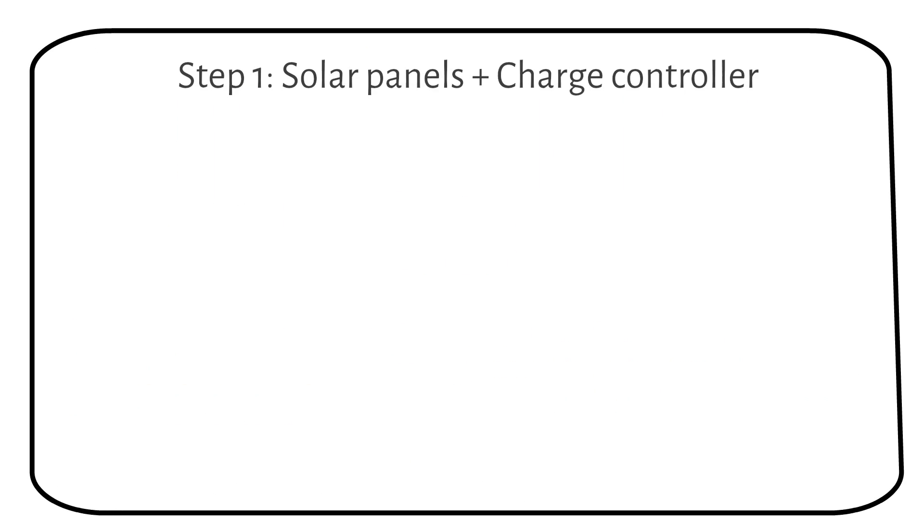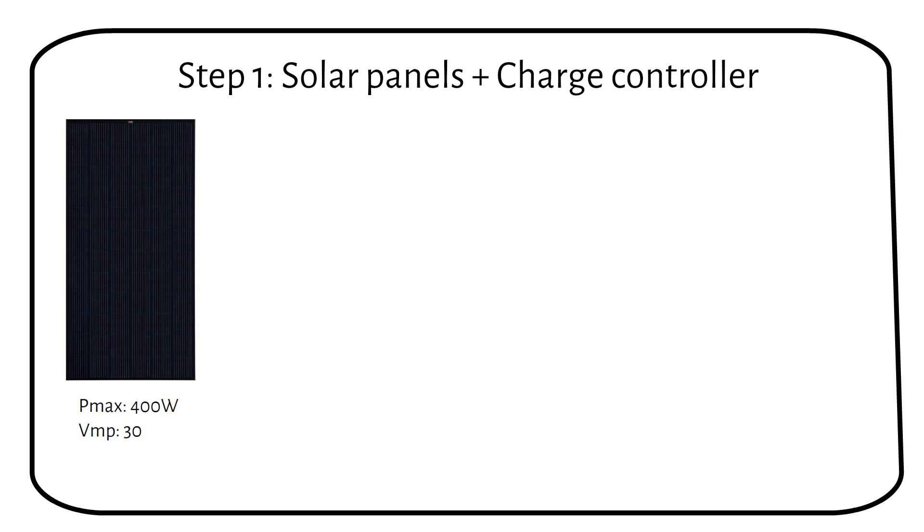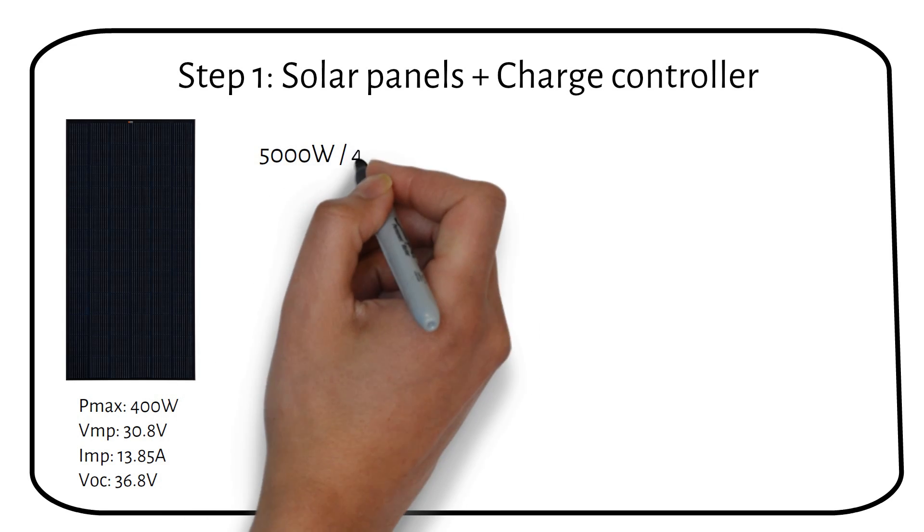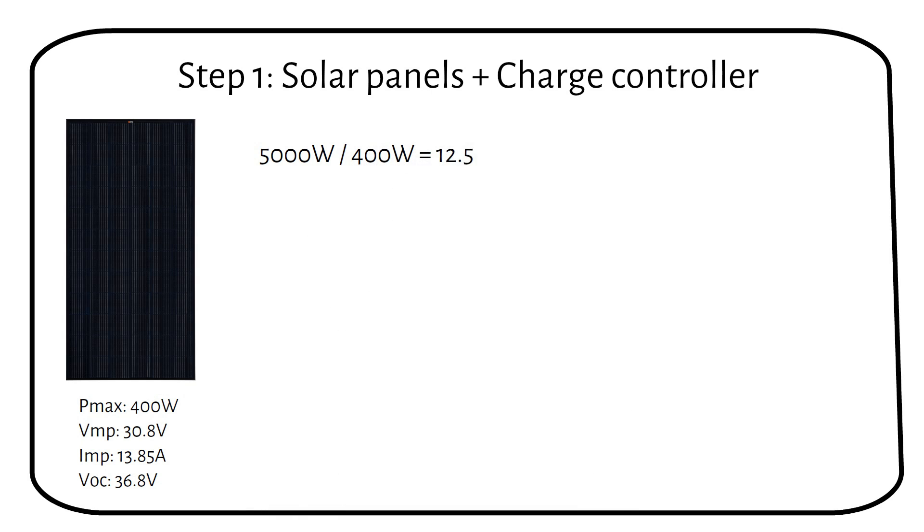Let's start by selecting solar panels. For this example, I will use Canadian Solar 400W solar panels. To determine how many panels we need, divide the total desired solar power, which is 5000W, by the power of each panel, which is 400W. You will need 12 solar panels, and we have a total of 4800W.